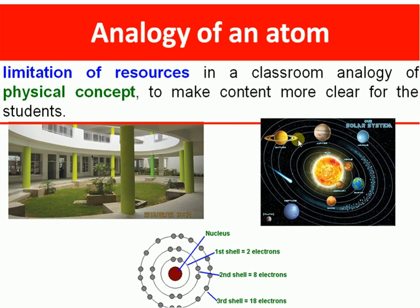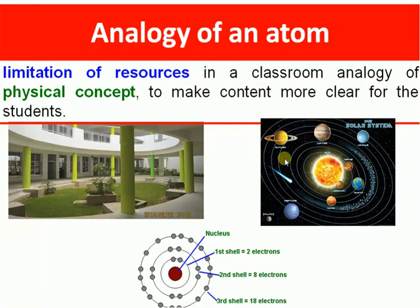On the left-hand side you are watching a circular building. This is the ground floor, then first floor, second floor — these are rooms for specific classes, with a fixed number of students per section. Similarly, you see the solar system, where every planet revolves around the sun, which is at the center.